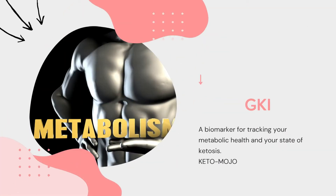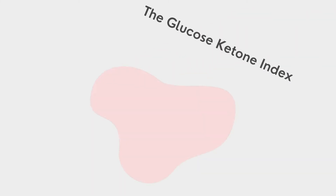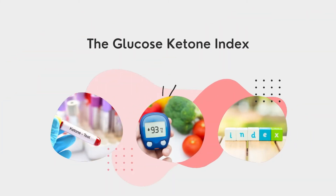According to Keto Mojo, GKI is a biomarker for tracking your metabolic health and your state of ketosis. It was invented by Dr. Thomas Seyfried for the management of brain cancer, but it is very valuable for the keto community. GKI stands for Glucose Ketone Index — it is your ratio of glucose to ketones in one single value, giving us a good idea of where we stand metabolically and how much fat and ketones we are burning.